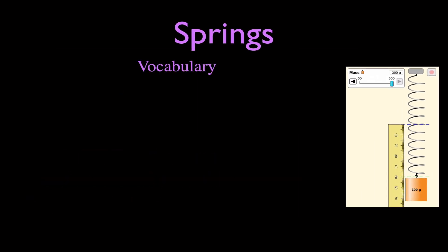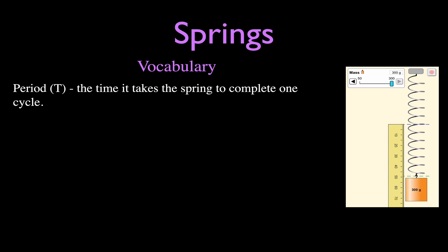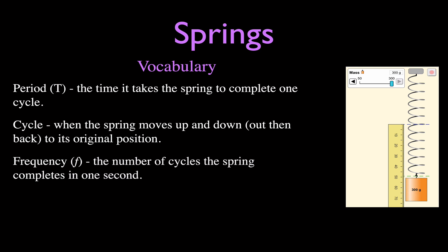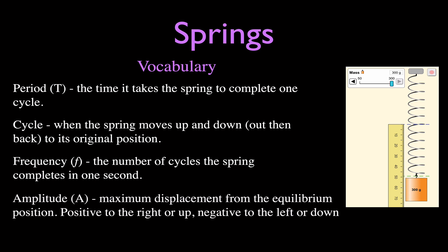We're going to be talking about the period of the spring. The period, symbol T, is the time it takes for the spring to complete one cycle — moving up and down and coming back to its original position. Frequency is the number of cycles completed in one second. Amplitude, capital A, is the maximum displacement from the equilibrium position — positive is up or right, negative is down or left.